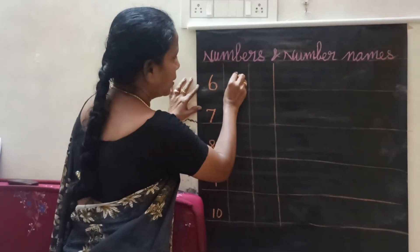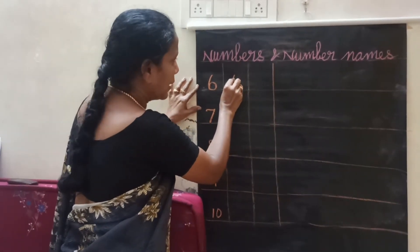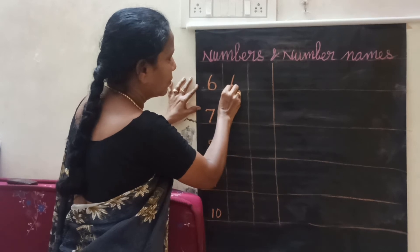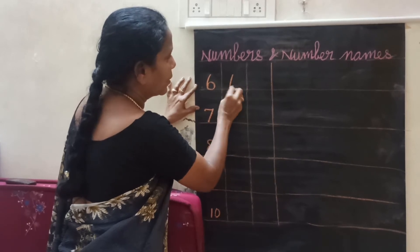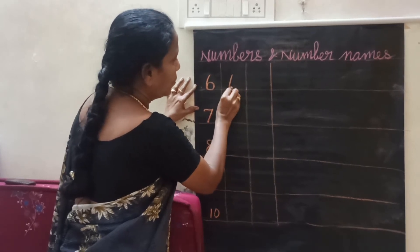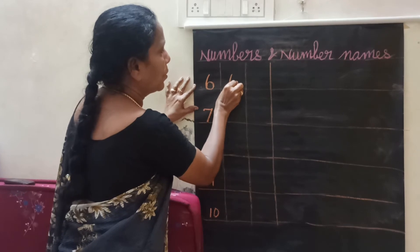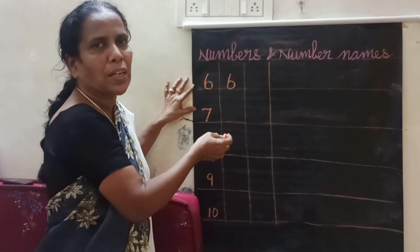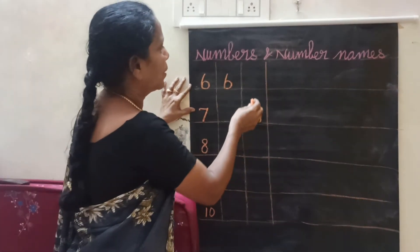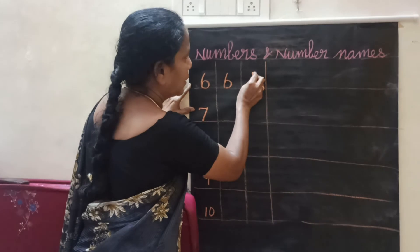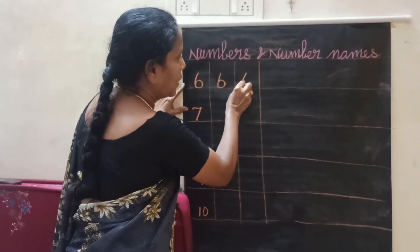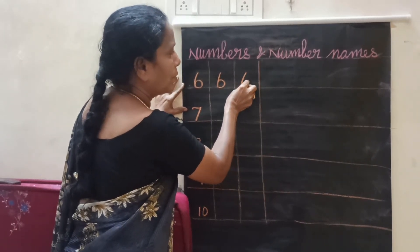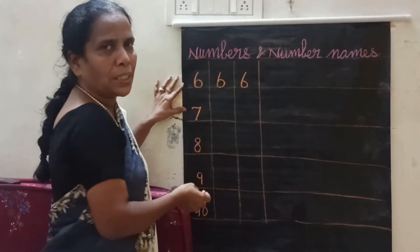1 standing line. 1 curve. If you put like this, the 6 will come. Again, standing line, 1 curve. 6.